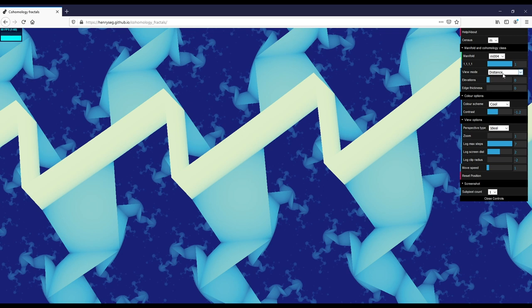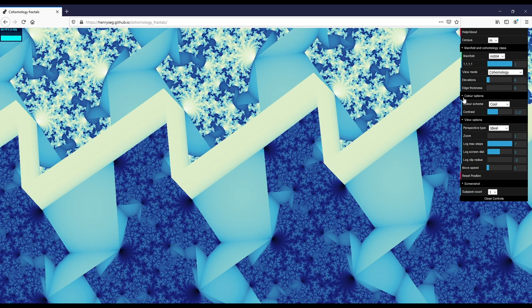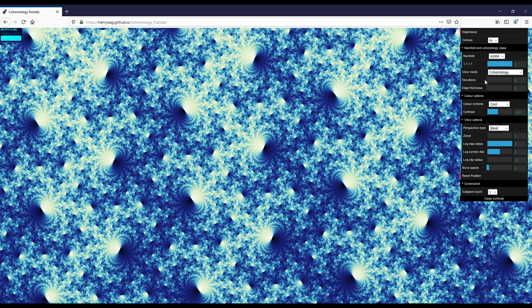So if I switch from distance to cohomology, you can see it's darker over here on the bottom and lighter over here on the top. So if I turn off the elevations, then you just see through the surfaces rather than the light rays getting stopped at the surface. And this is all that it is. This is all that these cohomology pictures are showing.